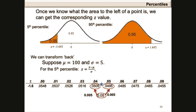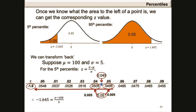This indicates that our probability of 0.05 lies right in the middle of 0.0495 and 0.0505. Reading off our z-value: the row is minus 1.6, and because 0.05 lies right in the middle of those two probabilities, the column decimal is going to be the average of 0.04 and 0.05, giving us 0.045. So our final z-value is minus 1.645, and this equals x minus 100 divided by 5, giving x equal to minus 1.645 times 5 plus 100, which is 91.775.